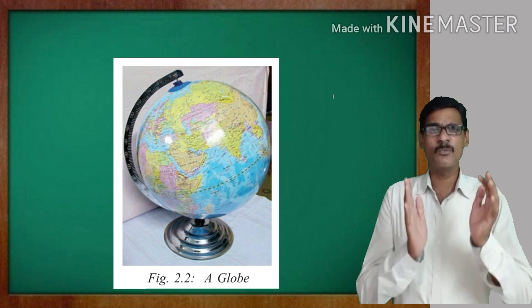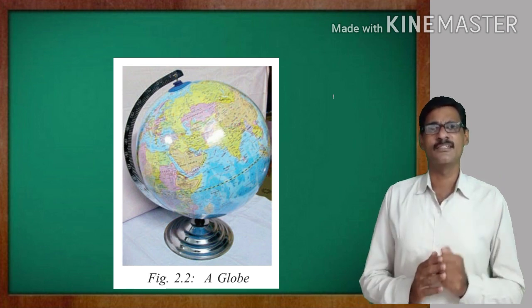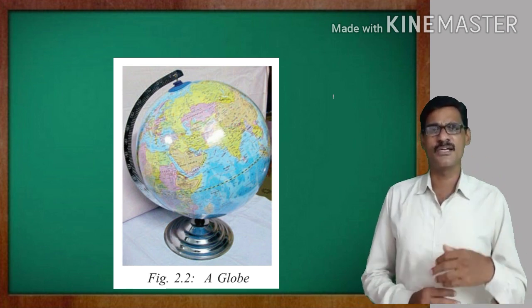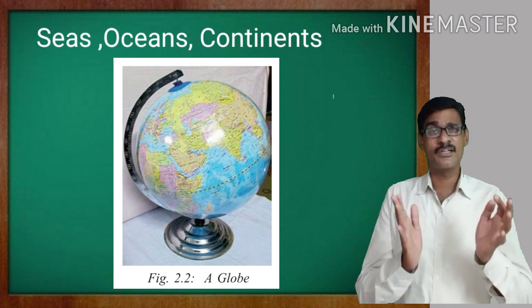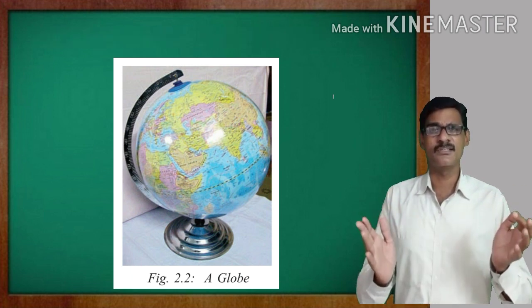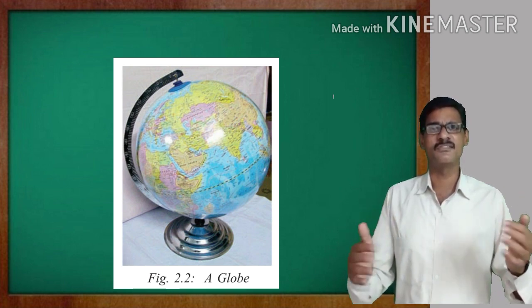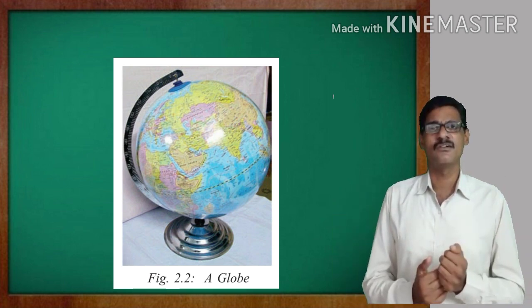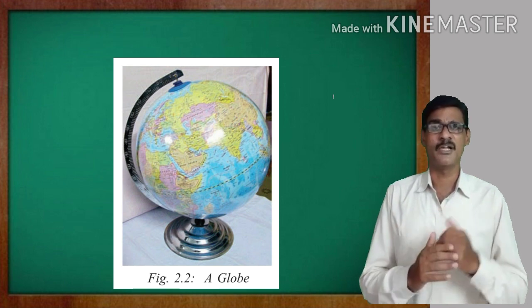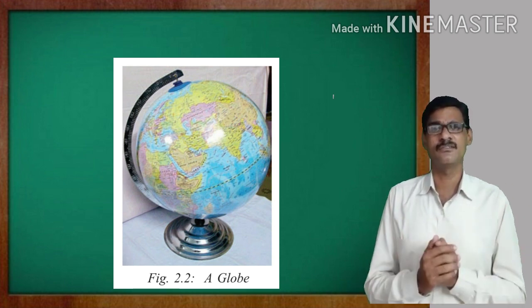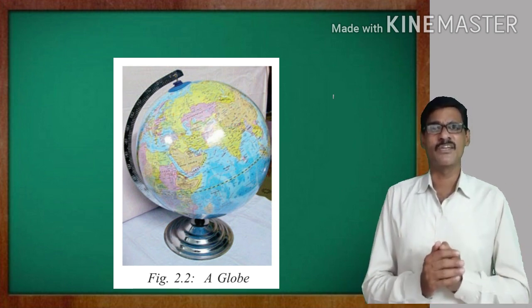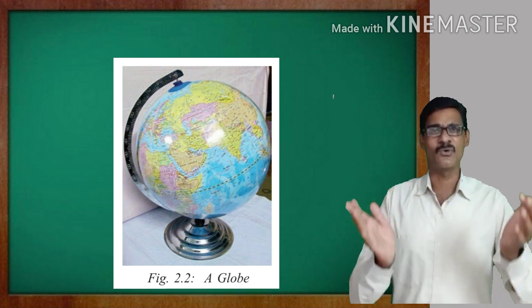This globe is showing the seas, oceans, and continents. And in the continents we have the countries, states, districts, mandals, villages, and mountains, plateaus, plains. So we can see all these things on the globe.